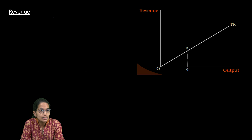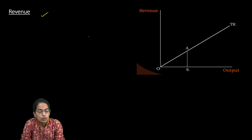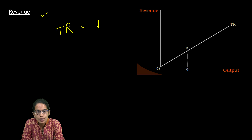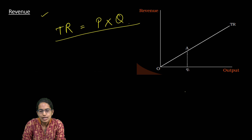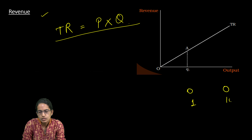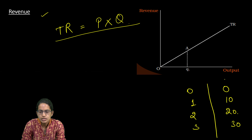In the case of perfect competition, how would revenue change? We need to first understand total revenue. Total revenue is nothing but the market price of the goods multiplied by the firm's output. For example, with chocolate boxes: zero boxes gives zero total revenue, one box gives 10, two boxes gives 20, three boxes gives 30, and so on.